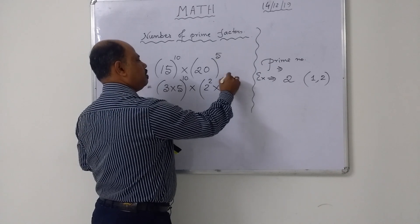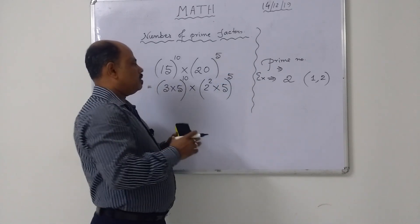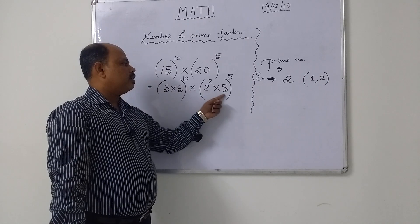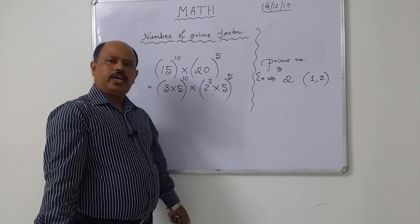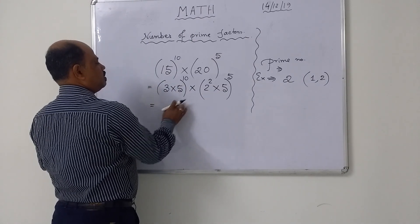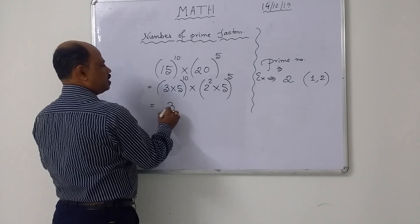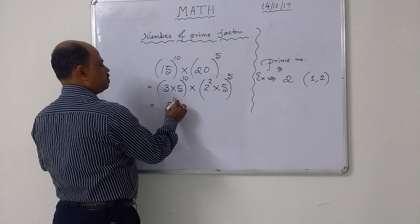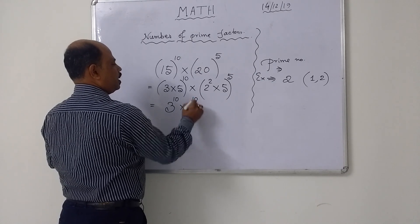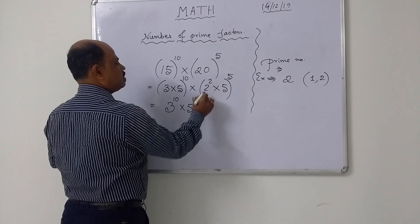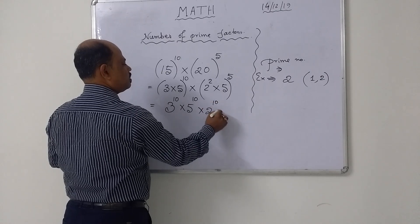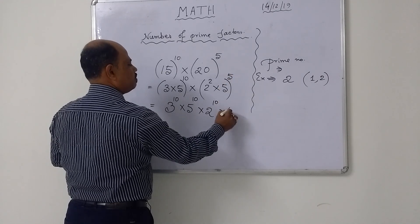You can write 20 as 2 squared into 5, the whole raised to the power 5. So mind it: all base numbers should be prime. Then calculate separately: 3 to the power 10, 5 to the power 10, 2 to the power 2 into 5, and again 5 to the power 5.